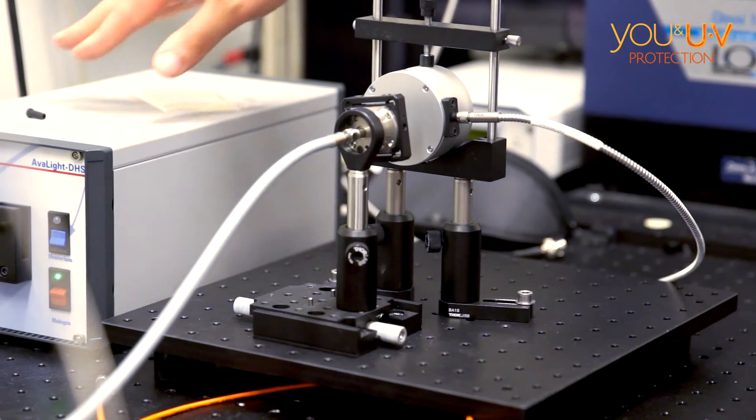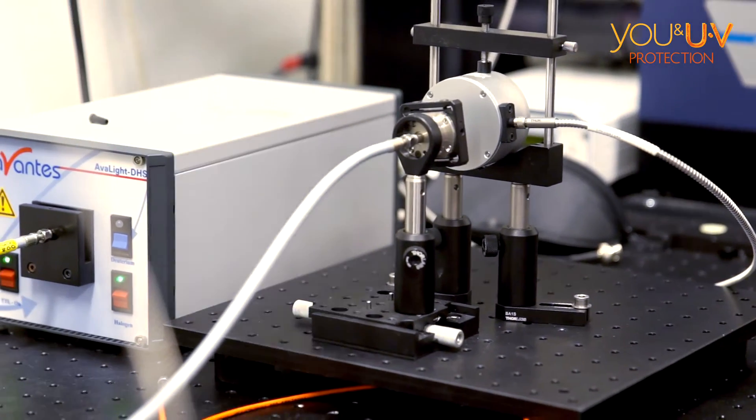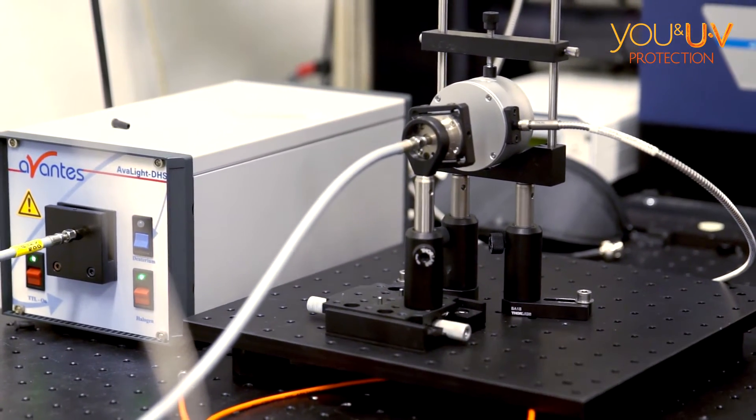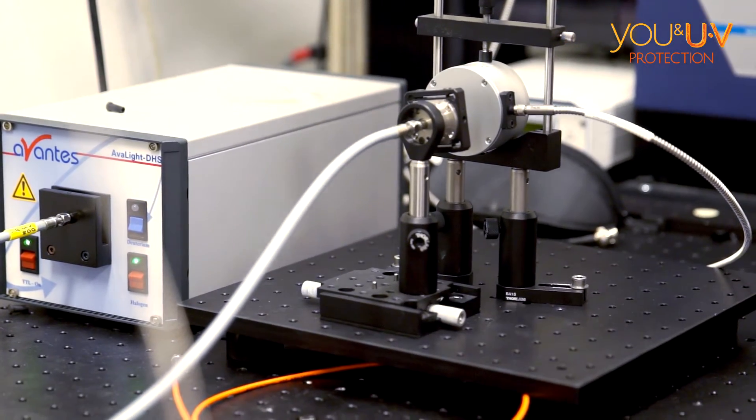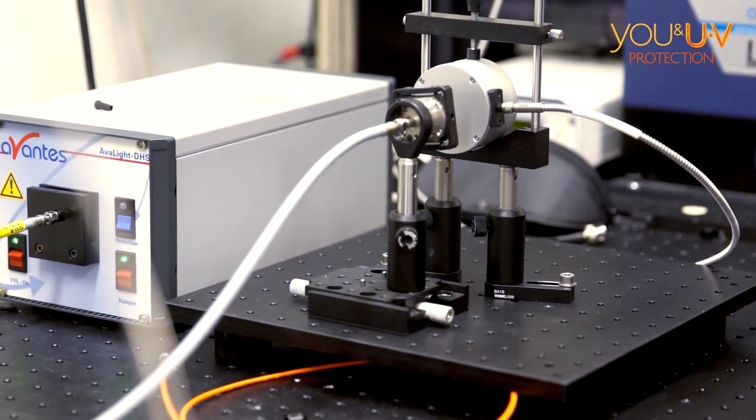We have here a light source, either halogen, which is a black body emitter, and that gives an emission spectrum which is mostly visible light, near infrared heat—a lot of heat and a lot of visible, very little UV.